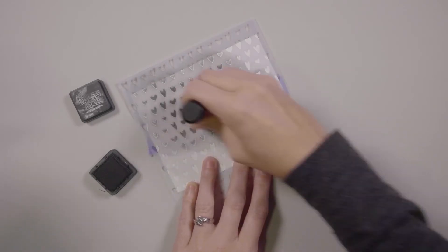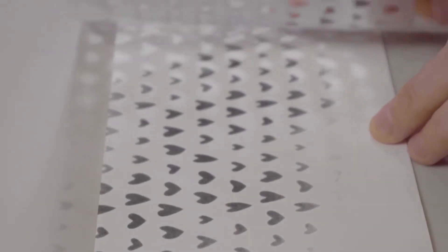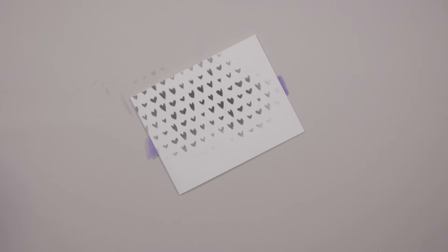I'm using some black soot distress ink and an ink blending tool. And I will be blending through that stencil onto the paper. Just a partial background. And check it out! I like that fun playful look of this stencil.